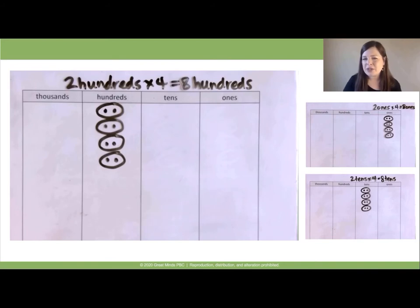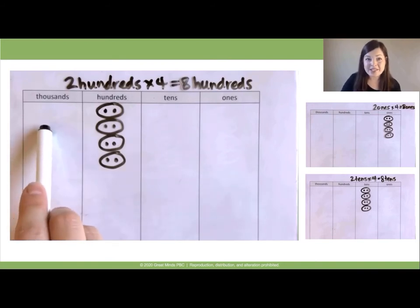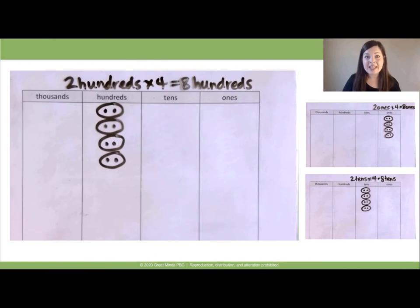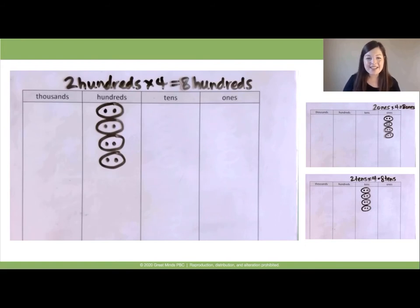So what do you think would happen if we multiplied 2 thousands times 4? Pause the video to explain your prediction. I have a friend who said he thinks it would look the same again — we would again have 4 groups of 2 units, but this time the value of the place value discs would be thousands, and so the product would be 8 thousands. Is that what you predicted? Great thinking!